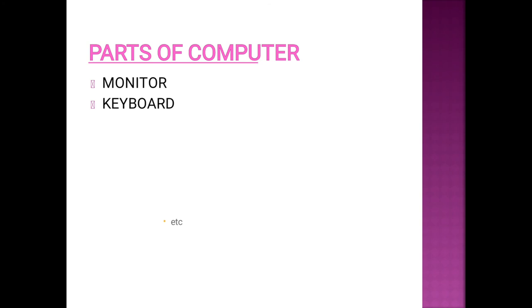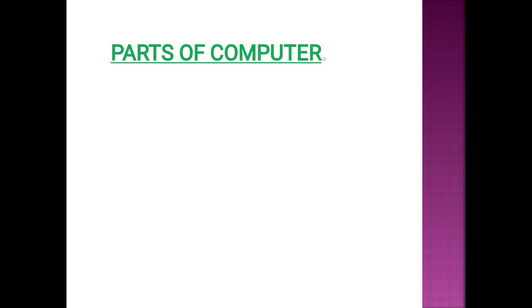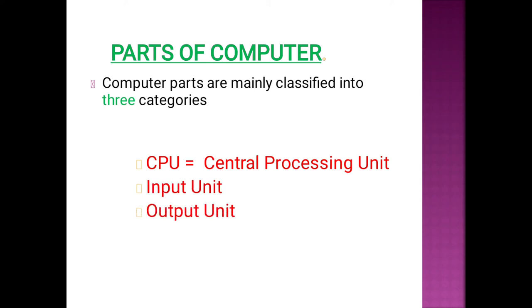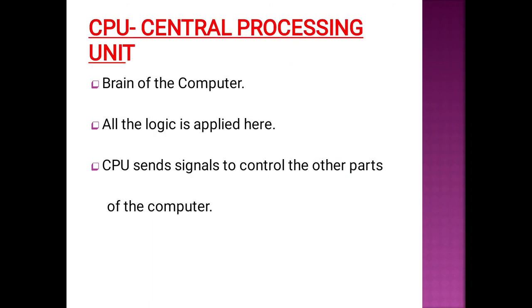You are familiar with many parts of a computer — monitor, keyboard, mouse, CPU, printer, scanner, speaker, etc. Computer parts are classified into three categories: CPU (central processing unit), input unit, and output unit. The CPU is called the brain of the computer. All the functions happen inside the CPU, and it sends signals to control the other parts of the computer.